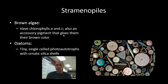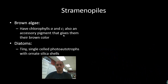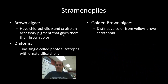Also included in the straminopiles are diatoms. These ornately shaped organisms are photo-autotrophic, meaning they use photosynthesis to produce food. They also form beautiful silica shells. In many marine food webs, diatoms are the primary producers — what we would often refer to as plankton — and they form a very significant part of the ocean marine system.